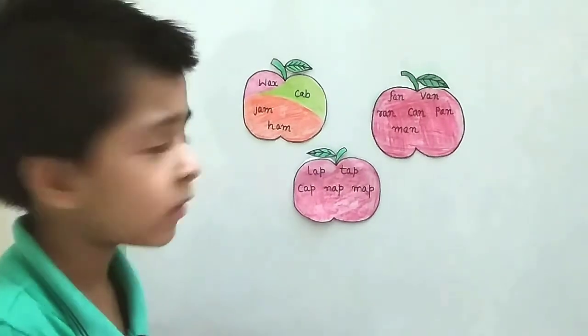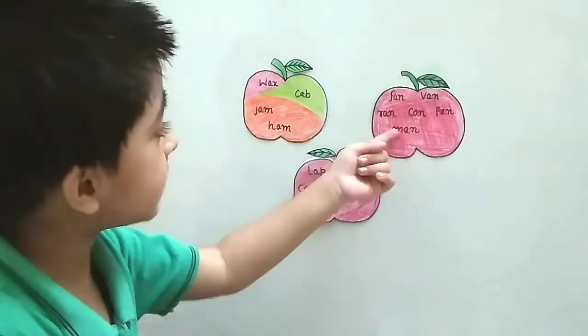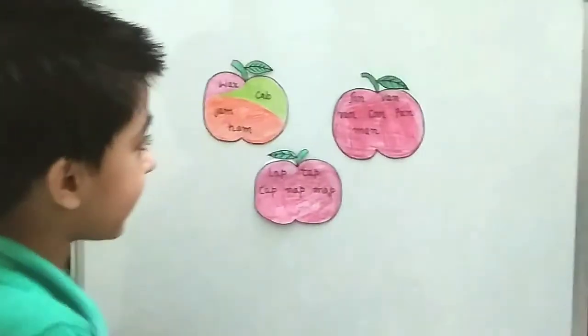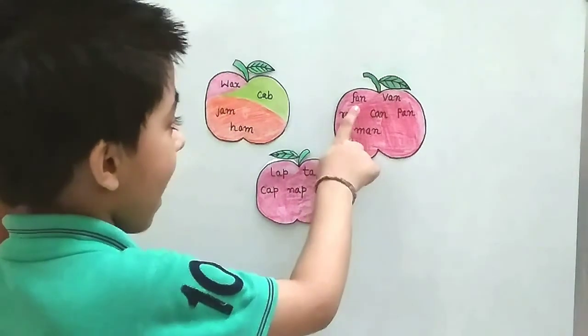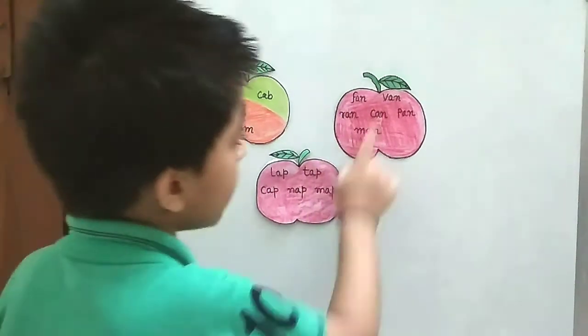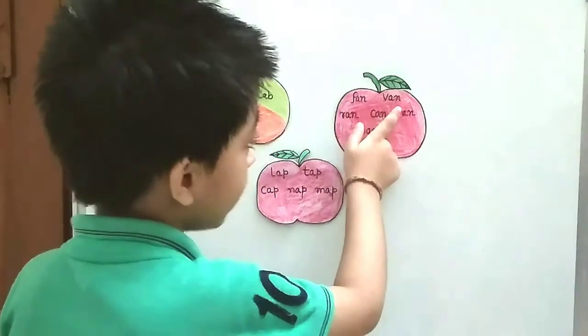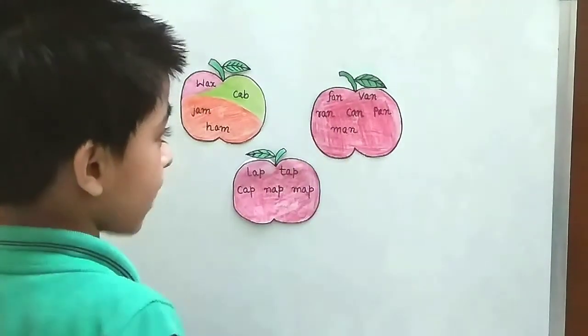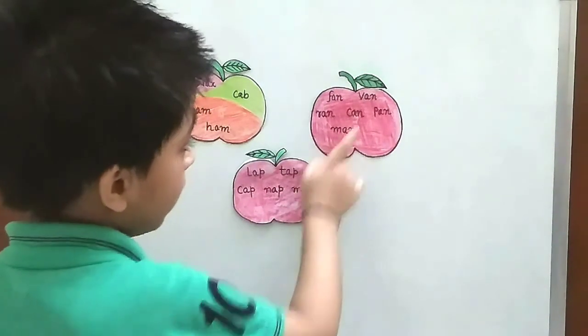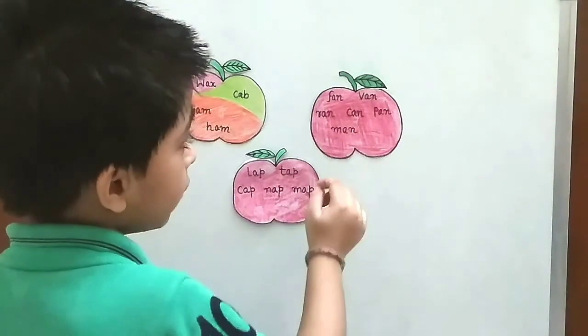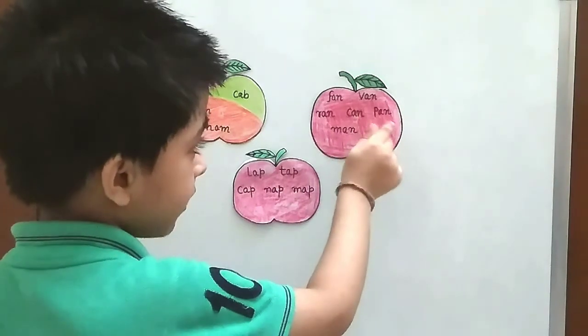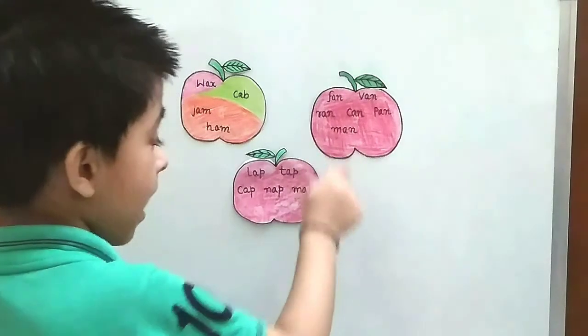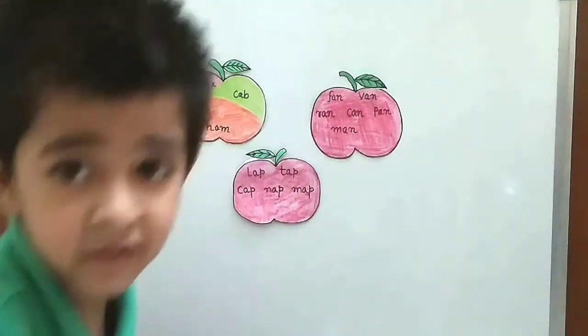Next, which apple do you want? I want this apple. So read all the words written on this apple. Okay. F-A-N, fan. V-A-N, van. R-A-N, ran. C-A-N, can. P-A-N, pan. M-A-N, man. Good.